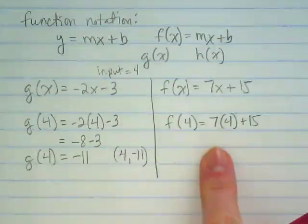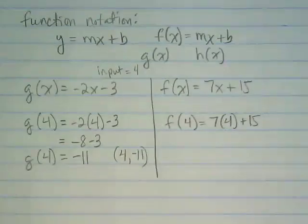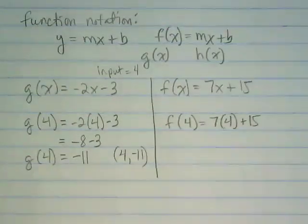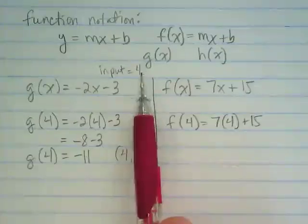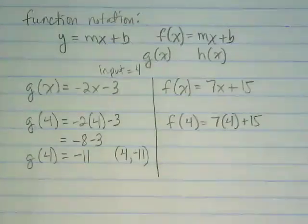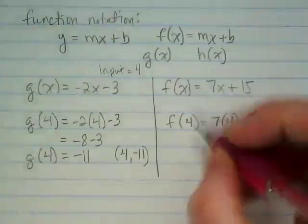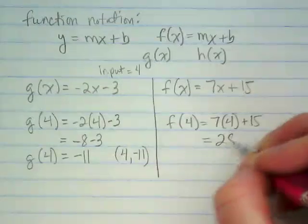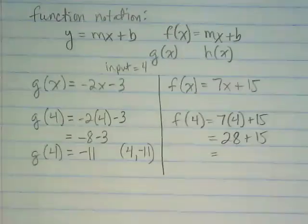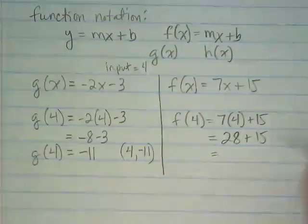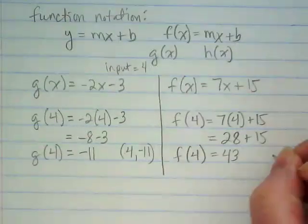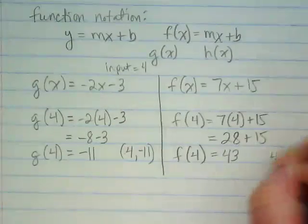This is a different equation. If we had the same equation and we wanted to find multiple inputs and multiple outputs we wouldn't use function notation, we'd use a table. But in this case I have the same input and I'm trying that same input in two different equations which makes function notation make sense. We're just trying one input in two different rules. In this case we would say 7 times 4 equals 28 plus 15 which equals 43. So when my input was 4 my output was 43 meaning this ordered pair would be 4 comma 43.